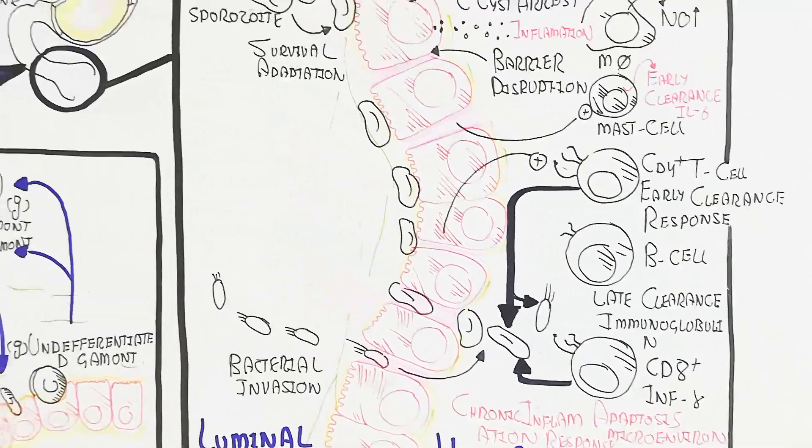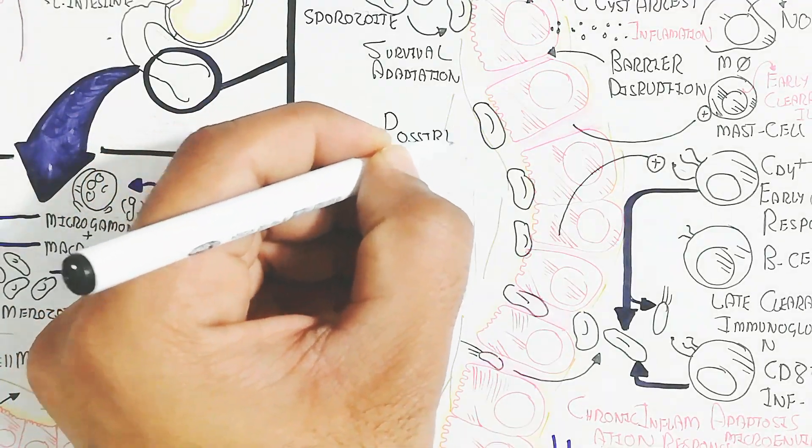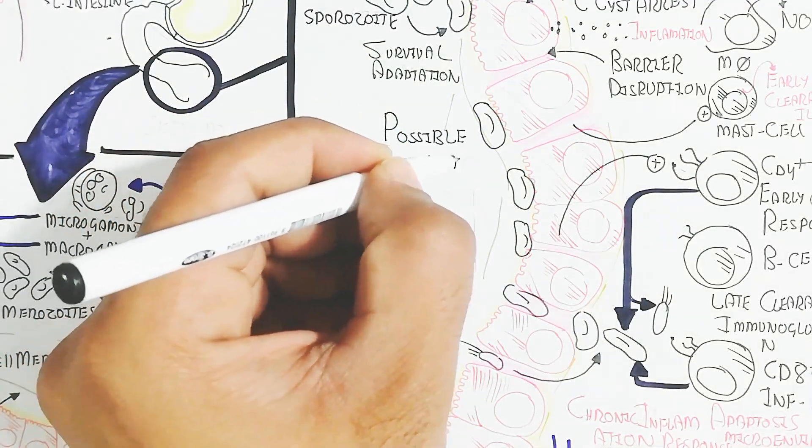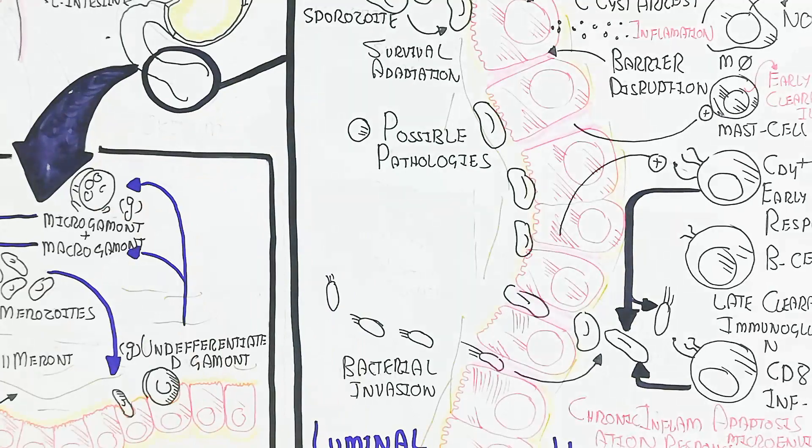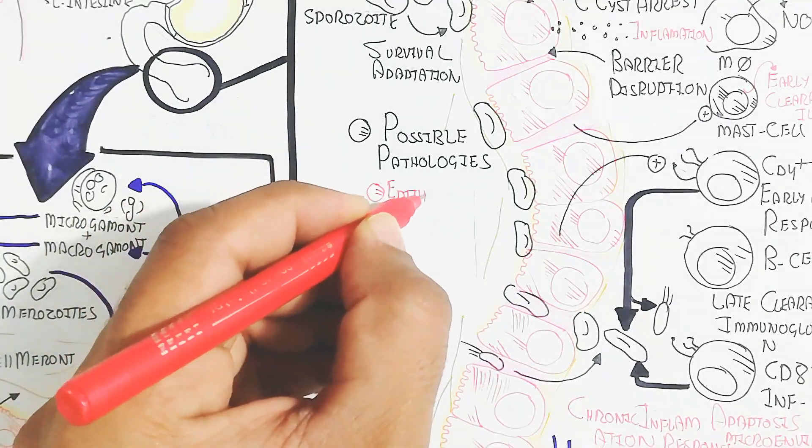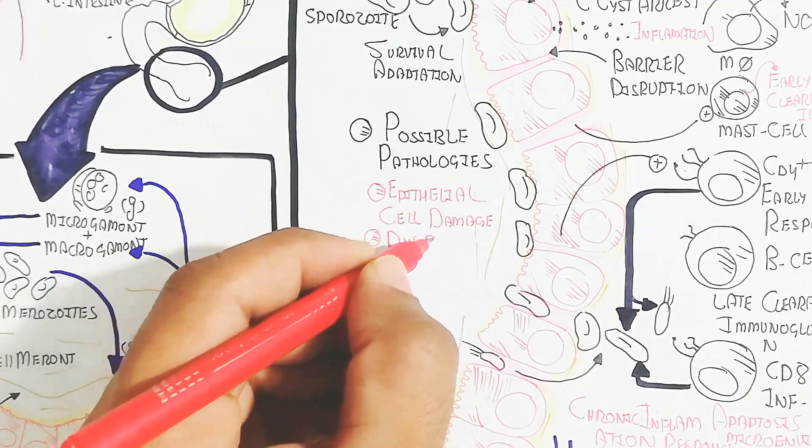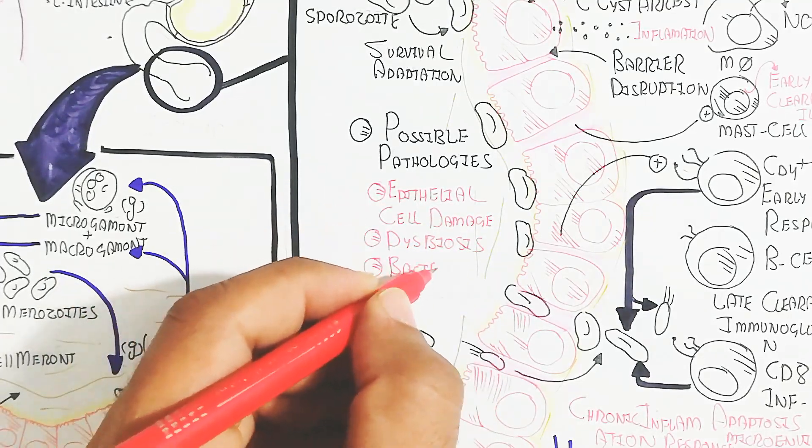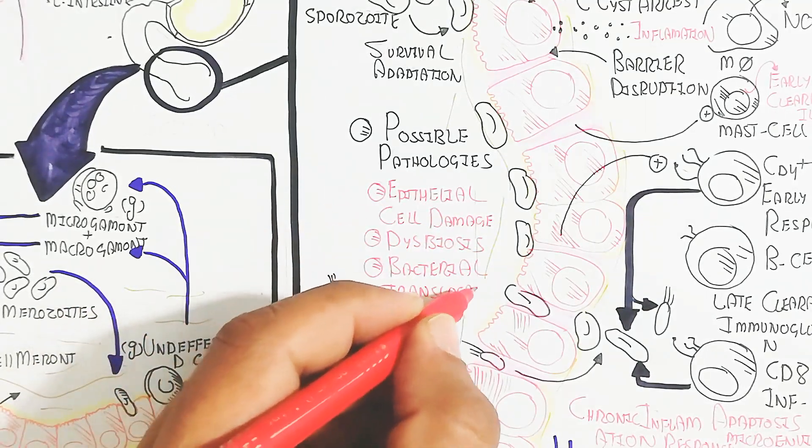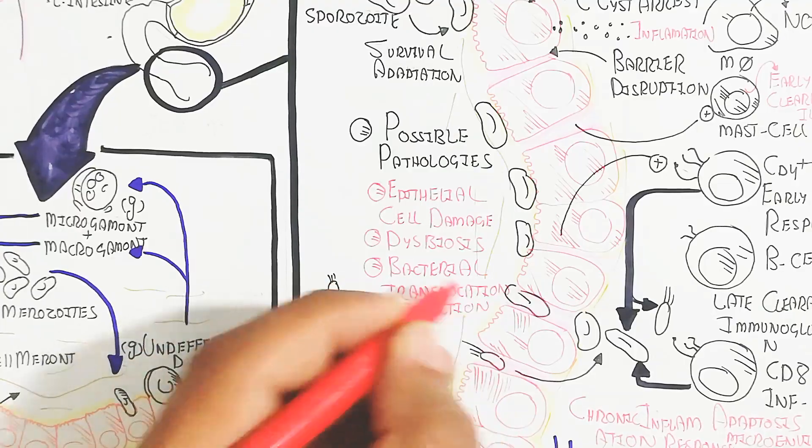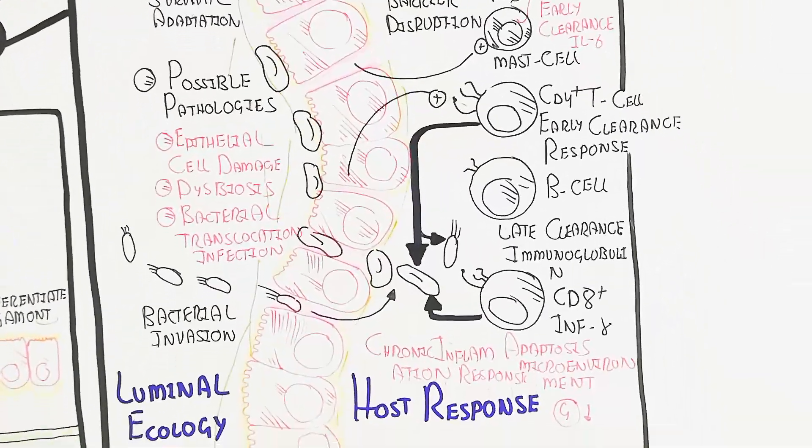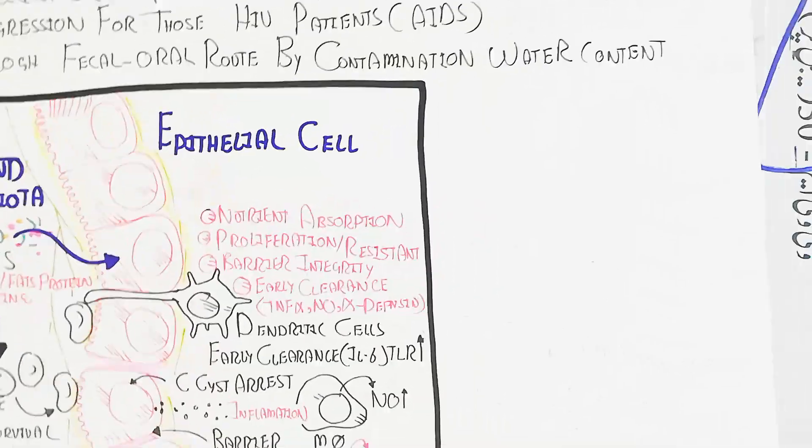CD4 cells target the pathogen. Pathogens can also enter via increased permeability. The microbiota invasion causes epithelial cell damage, dysbiosis, and bacterial translocation. This infection can cause possible pathogenesis.